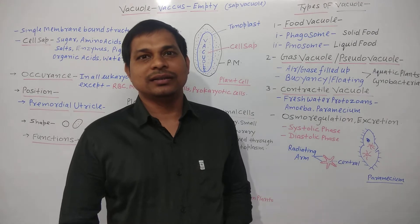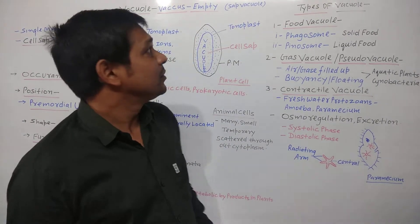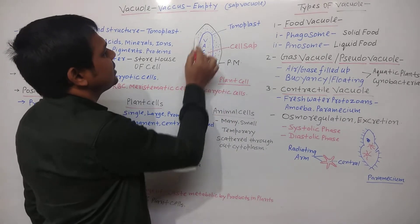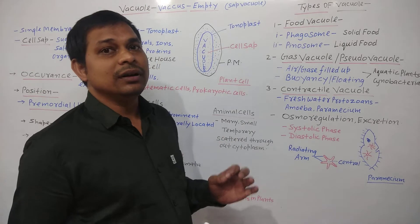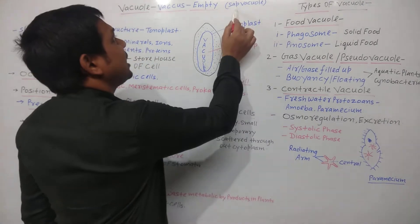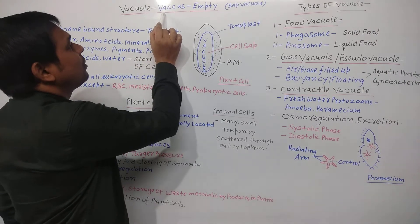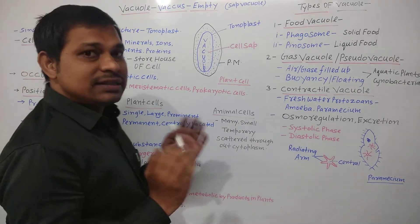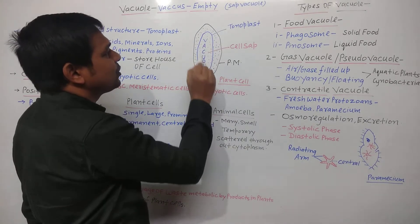Hello everyone, welcome to RKG Biology Tutorial. Today in this lecture we are going to discuss about the vacuole. This is the structure of a plant cell, and inside it there is a large centrally placed vacuole. When we generally talk about the vacuole, that means the sap vacuole. The word vacuole is derived from the word 'vacuos' that means empty — that means vacuole is a cell organelle that is filled up with the cell sap.